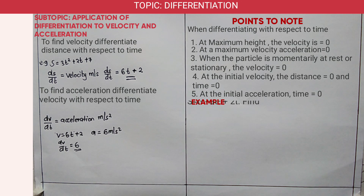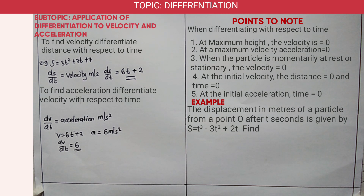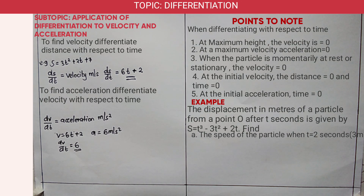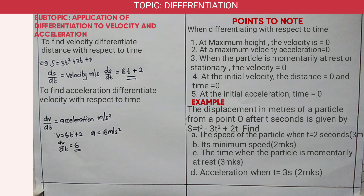Here is an example. The displacement in meters of a particle from point O after t seconds is given by s = 3t³ − 3t² + 2t. Find: (a) the speed of the particle when t = 2 seconds; (b) its minimum speed; (c) the time when the particle is momentarily at rest; and (d) the acceleration when t = 3 seconds.